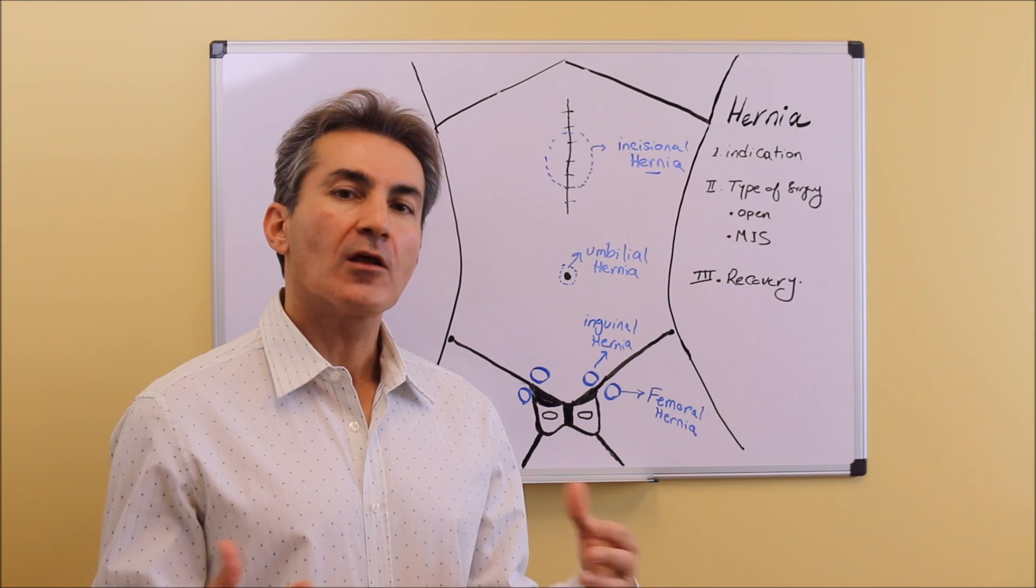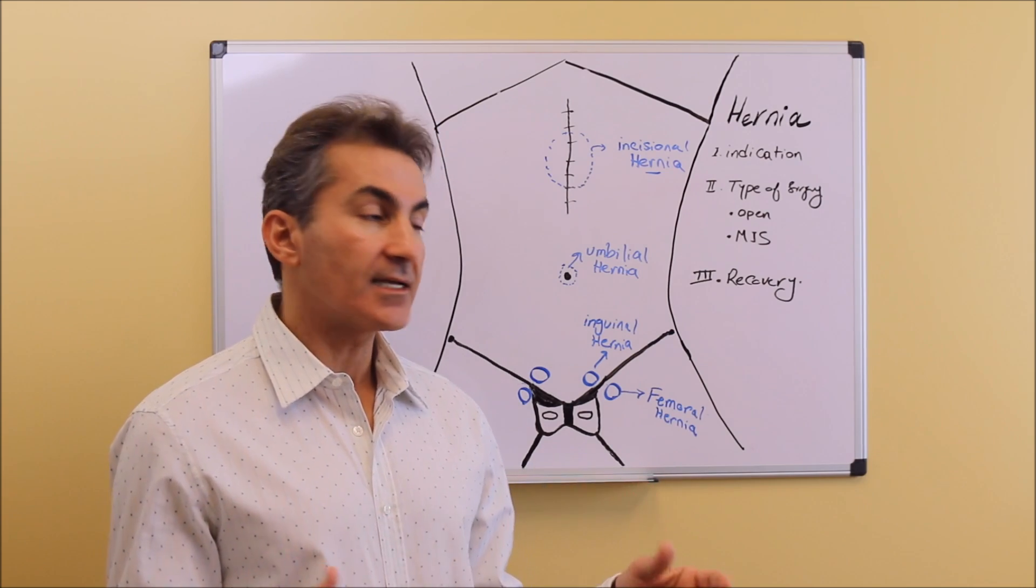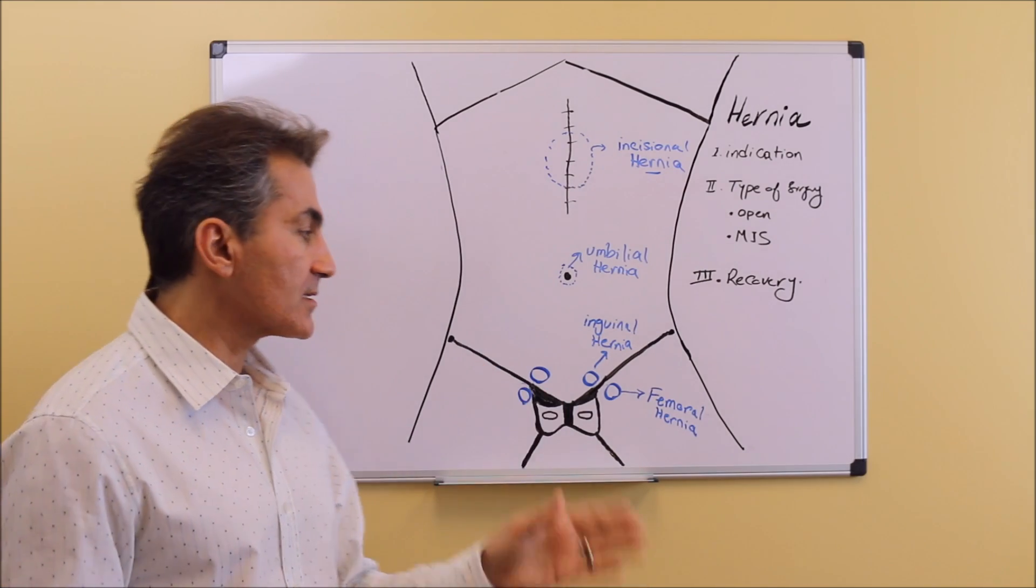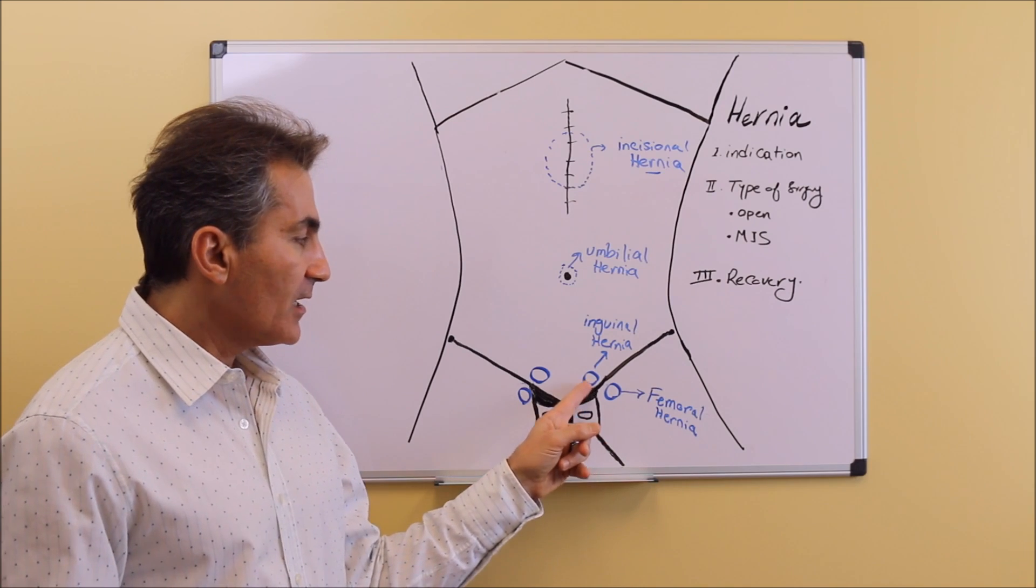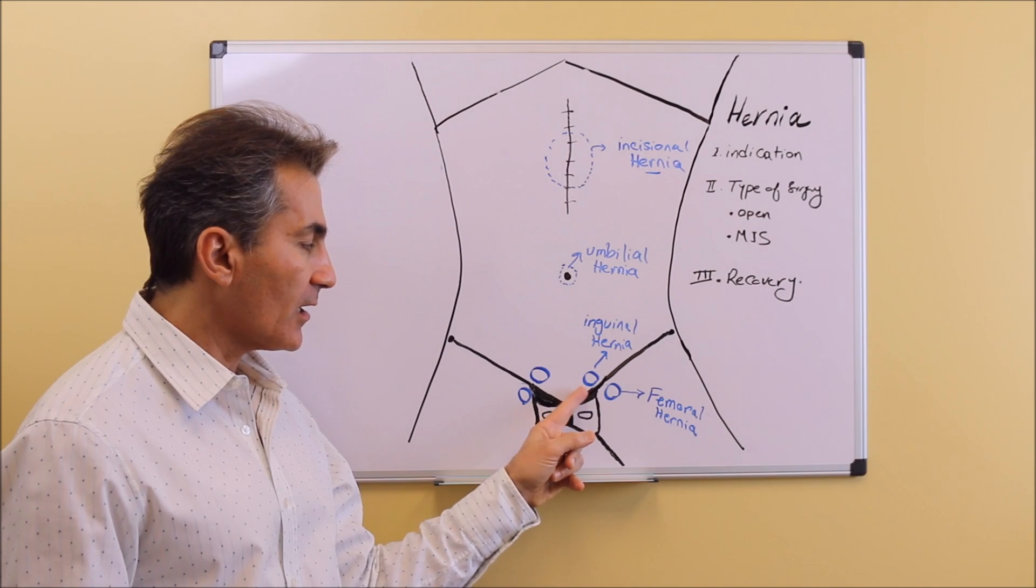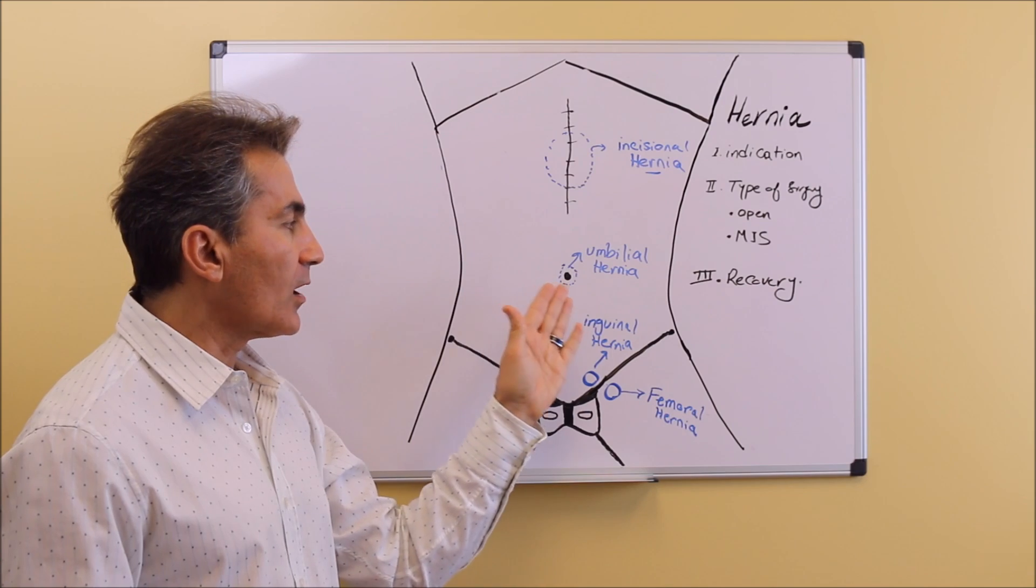There are different types of hernias and the most common ones are shown in this diagram. In the groin area you have two types: inguinal hernia and femoral hernia. On the abdominal wall, the most common ones are umbilical hernia which happens around the umbilicus.